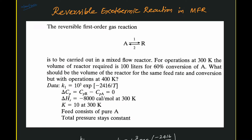This problem is about finding the required volume of a reactor for a reversible exothermic reaction in a Mixed Flow Reactor (MFR). A first order reversible reaction is carried out in a mixed flow reactor. For operations at 300 Kelvin, the volume of reactor is given as 100 liters for a conversion of 60% of A. What would be the volume of the reactor for the same feed rate and conversion but with operations at 400 Kelvin?